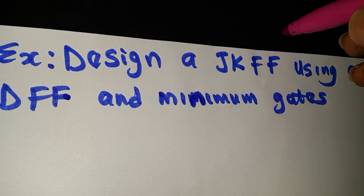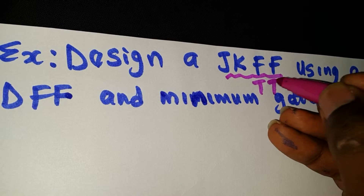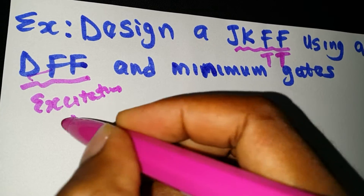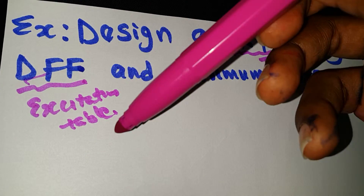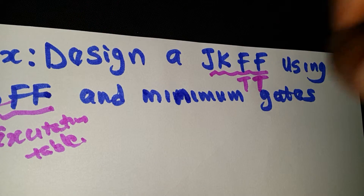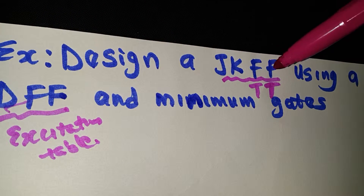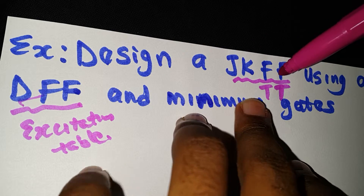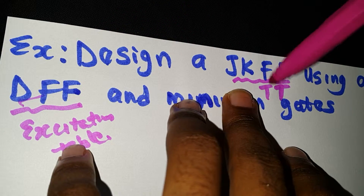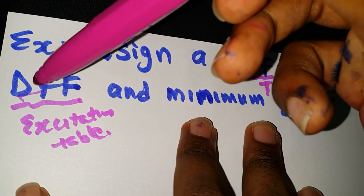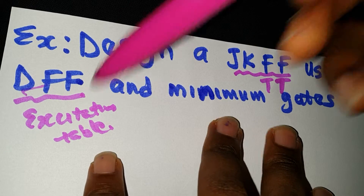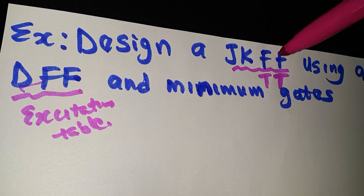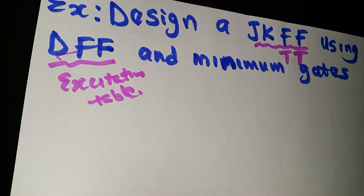What we need in this question is the JK truth table and the excitation table. We need the D flip-flop excitation table because we have to design a JK flip-flop using it. If the question were instead to design a D flip-flop using a JK flip-flop, you would construct the truth table for D and find the excitation table of JK. In this question, we construct the table for JK and find the excitation table for D.